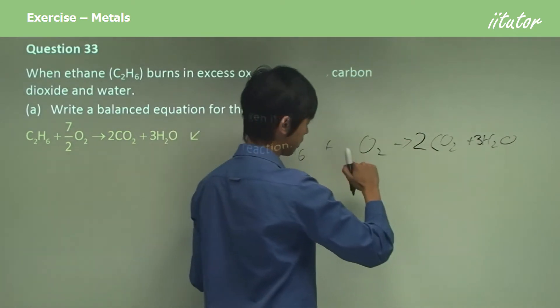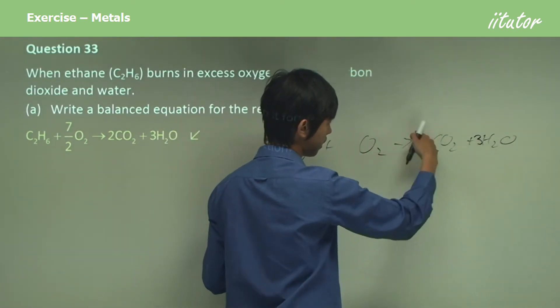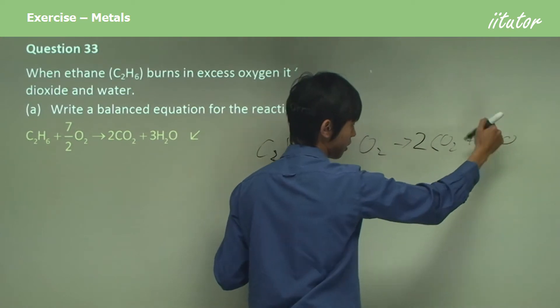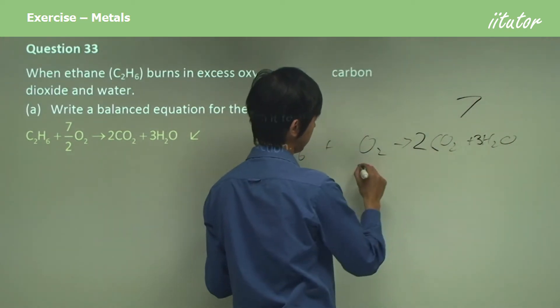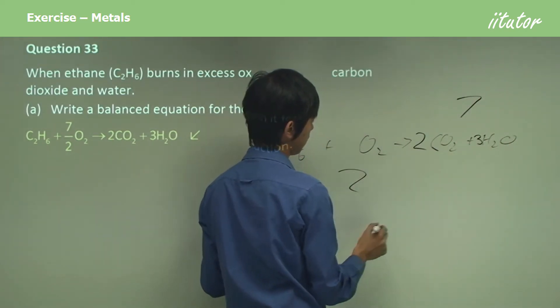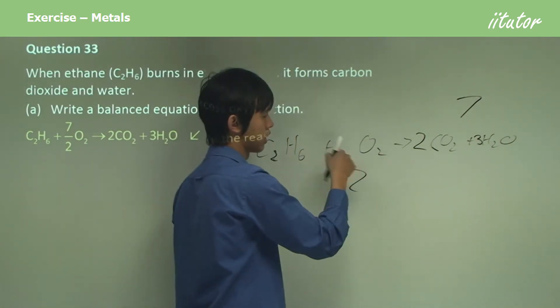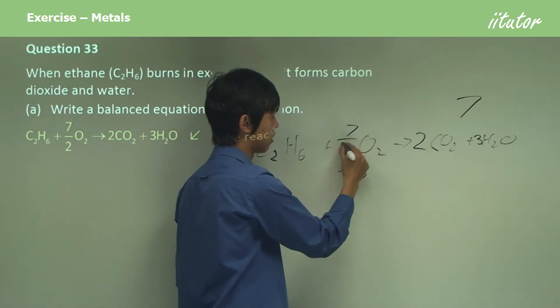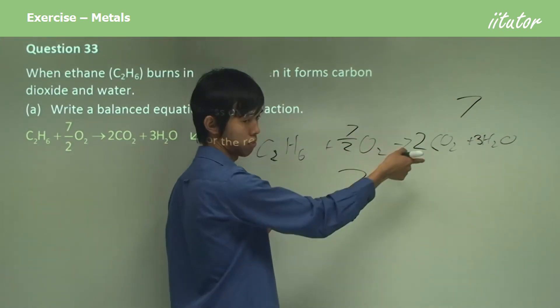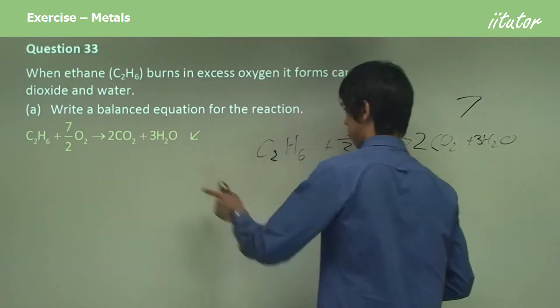Now we balance for oxygen. I've got four here, three here, that's seven on this side, and two on this side. So how do I get seven? How do I multiply something by two to get seven? Well, I could multiply seven on two by two, and that'll give me seven, and then that's our answer. There you go.